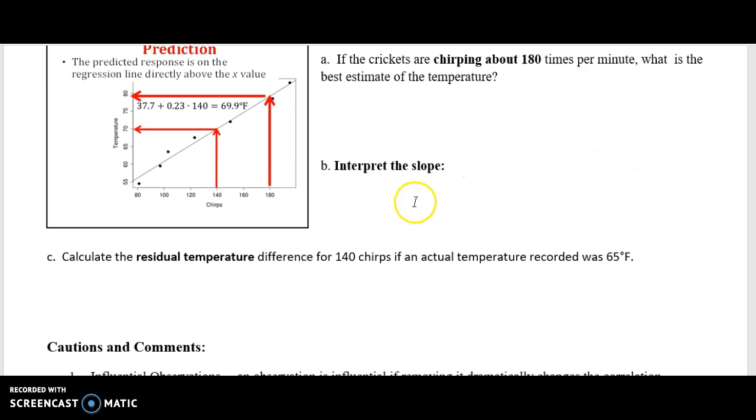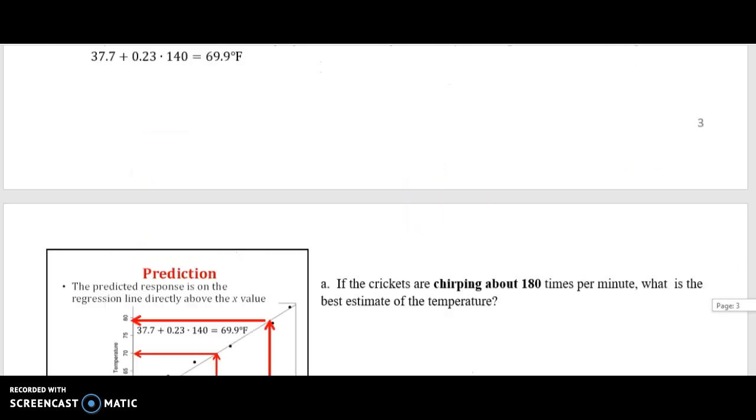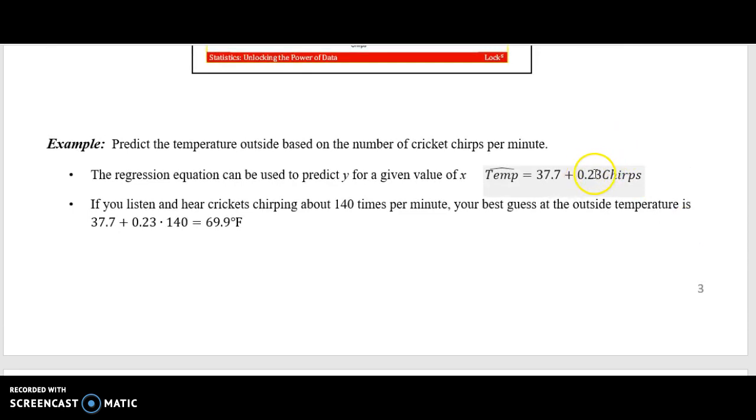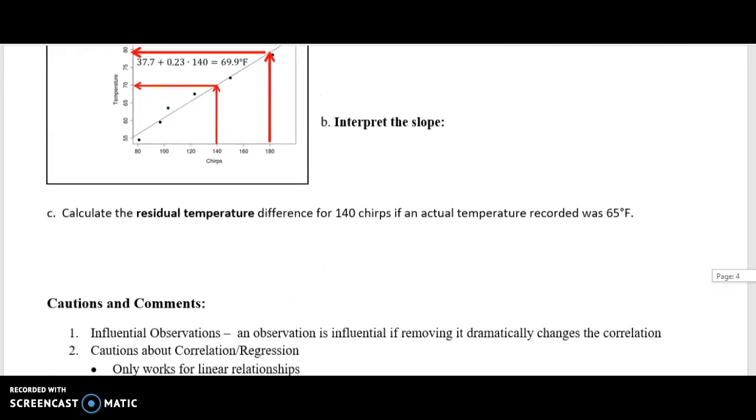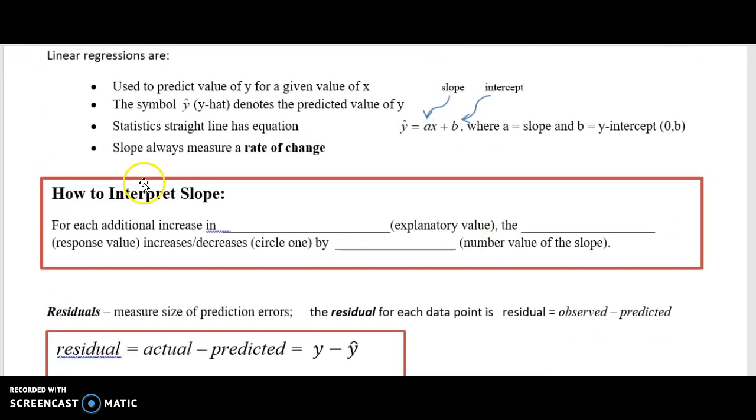The slope is always the value next to the explanatory variable. So our value next to the explanatory variable is 0.23. That's our slope, it's positive. What that is saying is, let's go back to the interpretation of how to interpret slope. For each additional increase in number of chirps, your explanatory variable, the response variable is the temperature, slope is positive, so increases by 0.23 degrees Fahrenheit. I'll read it again. For each additional increase in number of chirps per minute, the temperature increases by 0.23 degrees Fahrenheit.